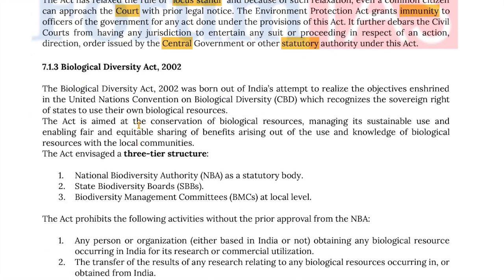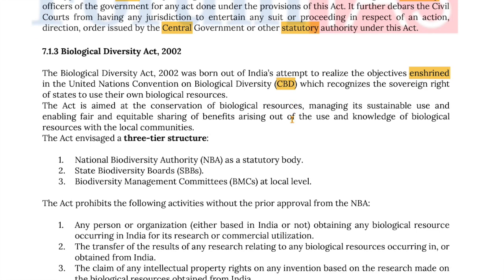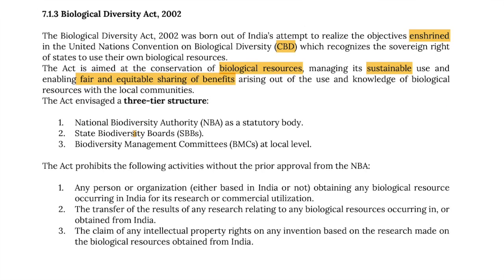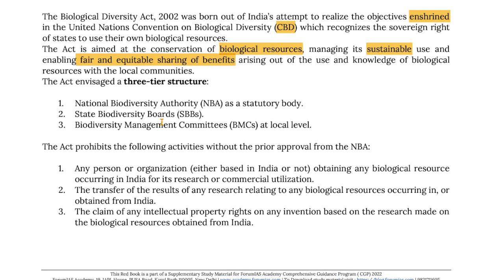The Biological Diversity Act of 2002 was born out of India's attempt to realize the objectives enshrined in the United Nations Convention on Biological Diversity, which recognizes the sovereign rights of states to use their own biological resources. The act is aimed at the conservation of biological resources, managing its sustainable use, and enabling fair and equitable sharing of benefits arising out of use and knowledge of biological resources with local communities. The act envisaged a three-tier structure: a National Biodiversity Authority as a statutory body at the national level, State Biodiversity Boards at the state level, and Biodiversity Management Committees at the local levels.